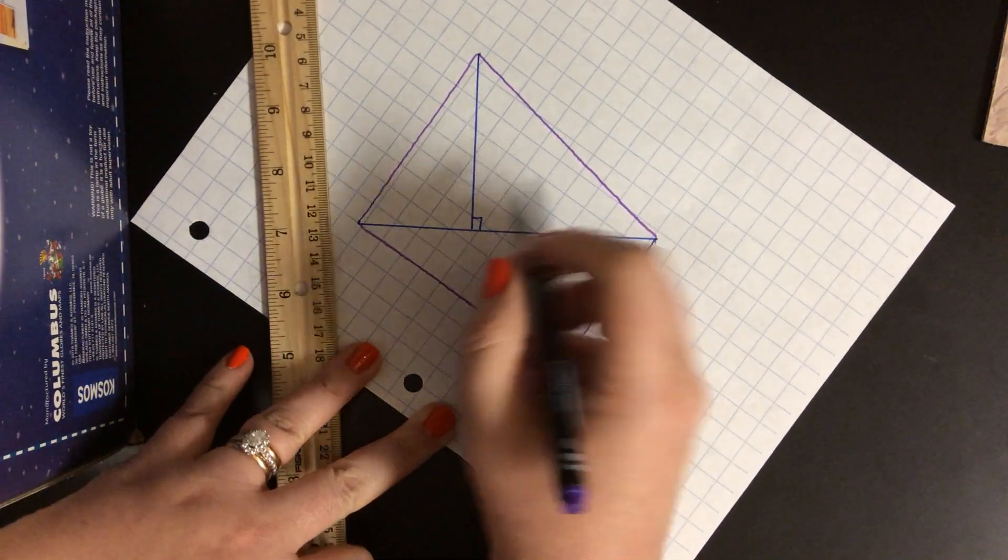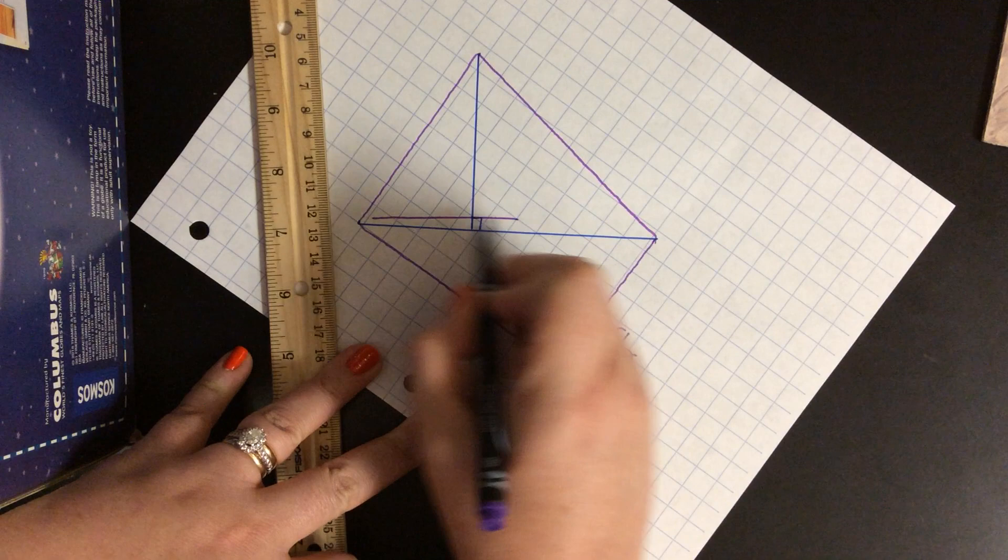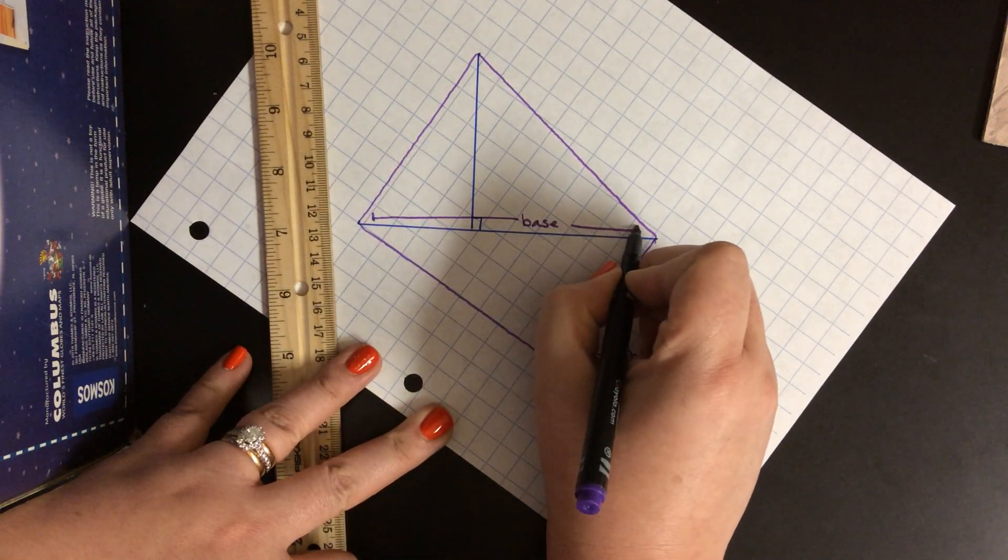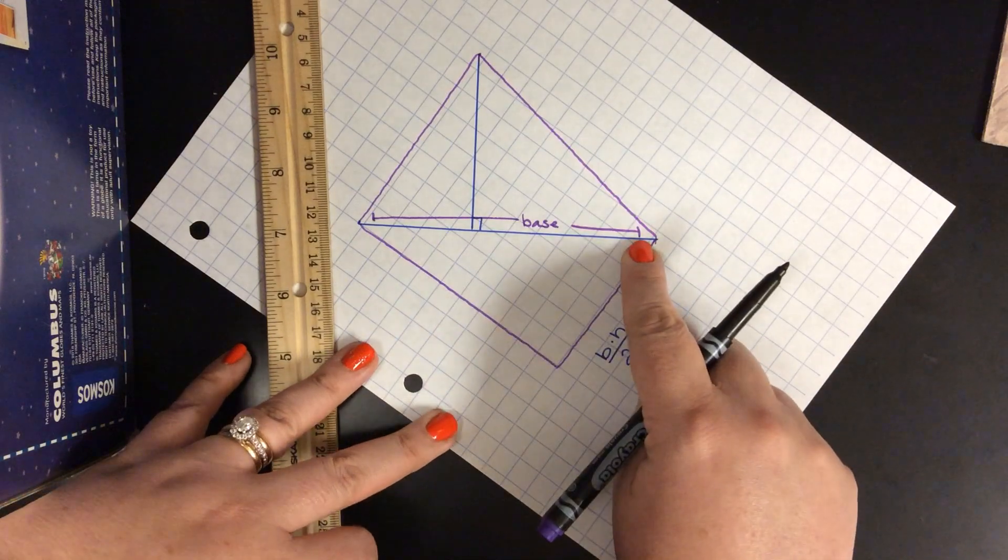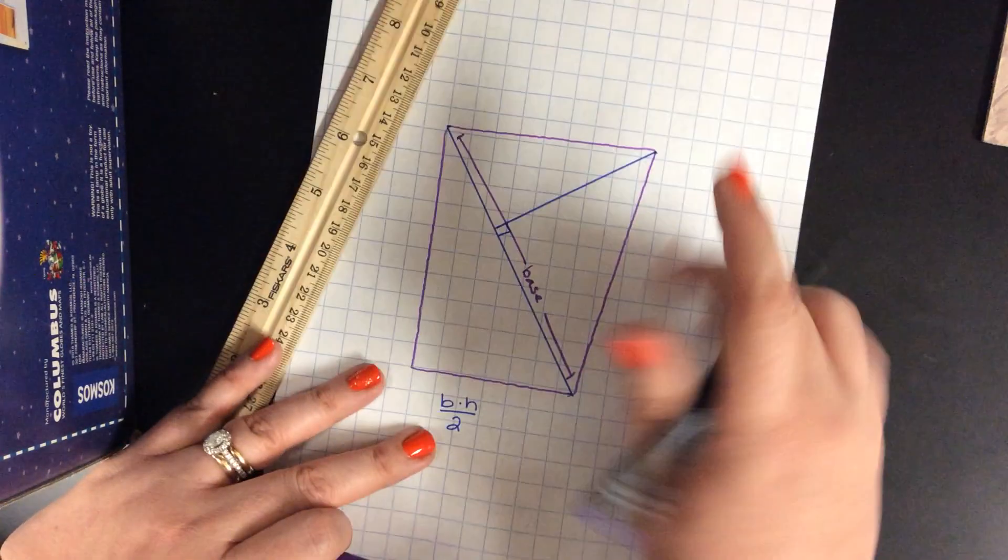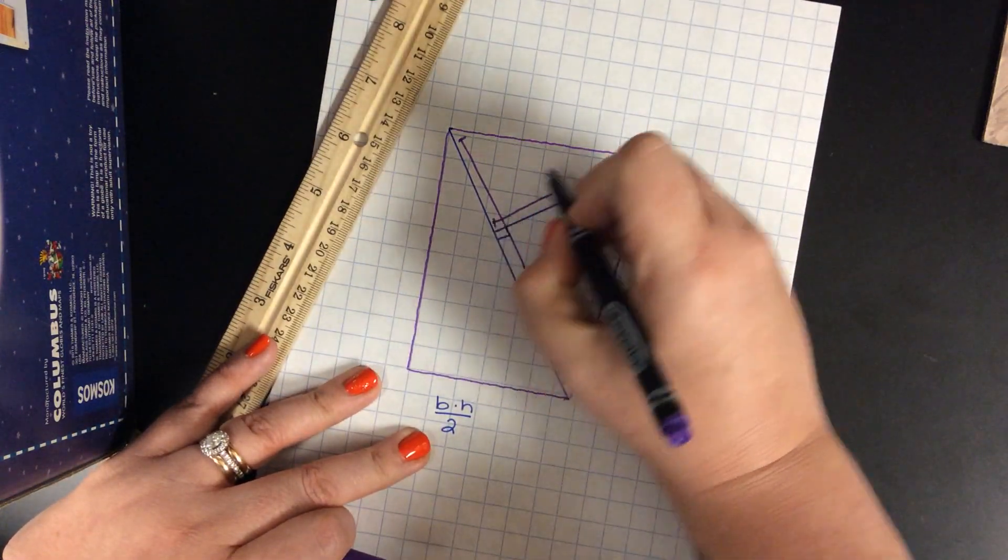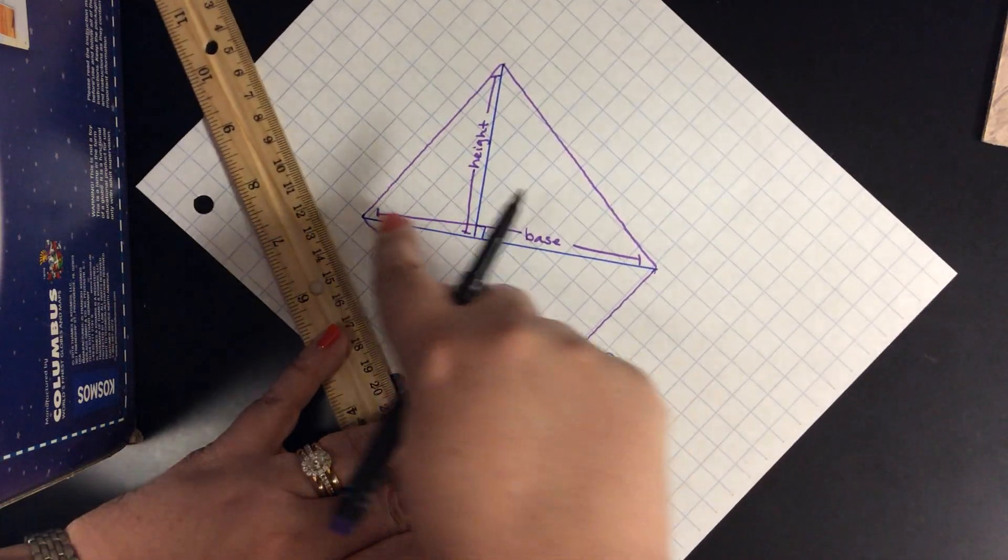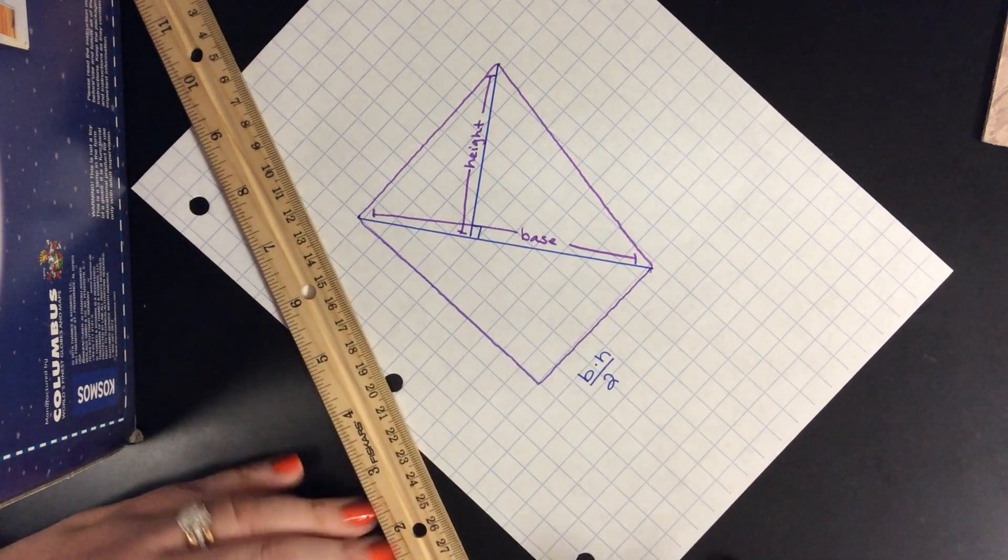So in this case, this whole blue line right here is my base, and this line that I just drew in is the height of this triangle right here.